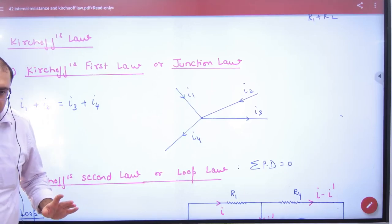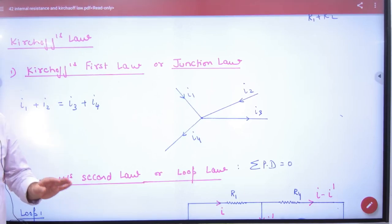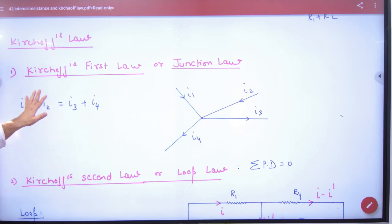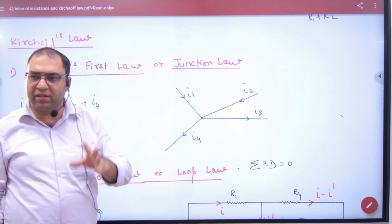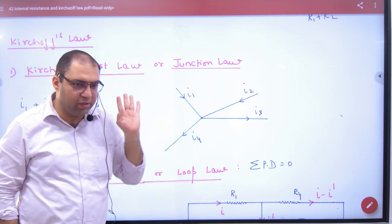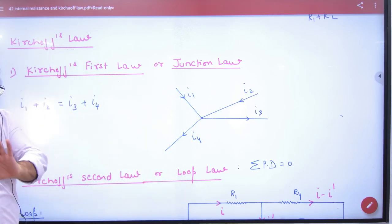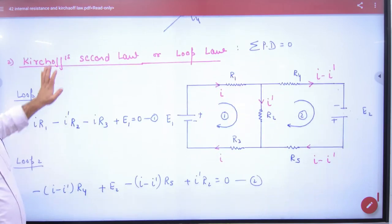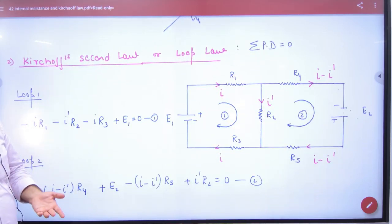We have already done Kirchhoff's Law, but in this lecture we'll use it extensively. Kirchhoff's two laws are the junction law and the first law. Accordingly, if there are many wires on a junction with current coming and going, the sum of incoming current equals the outgoing current. The other law is the loop law, the second law. This is a closed loop.